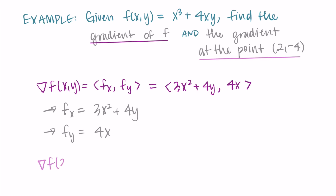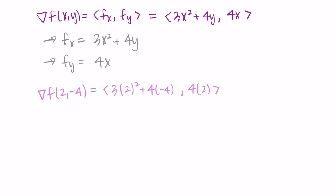Now we find the gradient at the specific point (2, −4). I take the gradient and plug in x = 2 and y = −4. In the first component: 3(2²) + 4(−4) = 12 − 16 = −4. In the second component: 4(2) = 8. So the gradient at (2, −4) is the vector (−4, 8), representing the rate of change in the x direction and the rate of change in the y direction at that point.